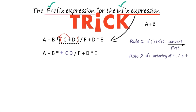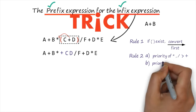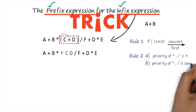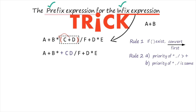There is one interesting point to note: here we have both star and slash, so which one to proceed with? The conflict is that the priority of star and slash are the same. So what do we do? There is one important concept known as associativity. Associativity means from which direction to read the expression. Whenever this situation arises, we check the associativity of the operator. The associativity of these operators is from left to right, so we read the expression from left to right.